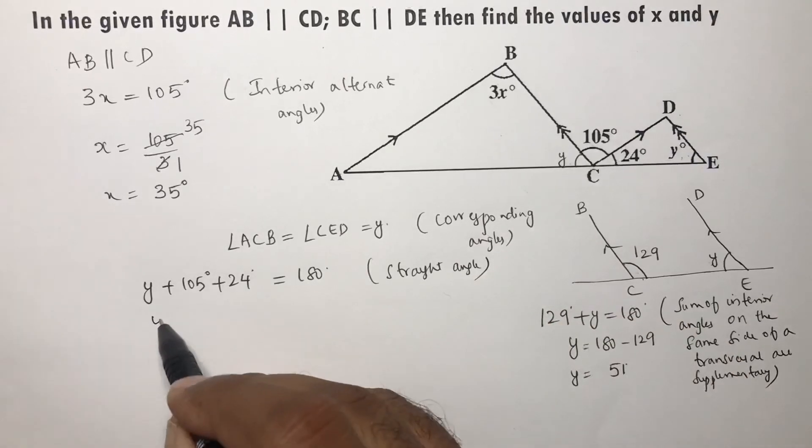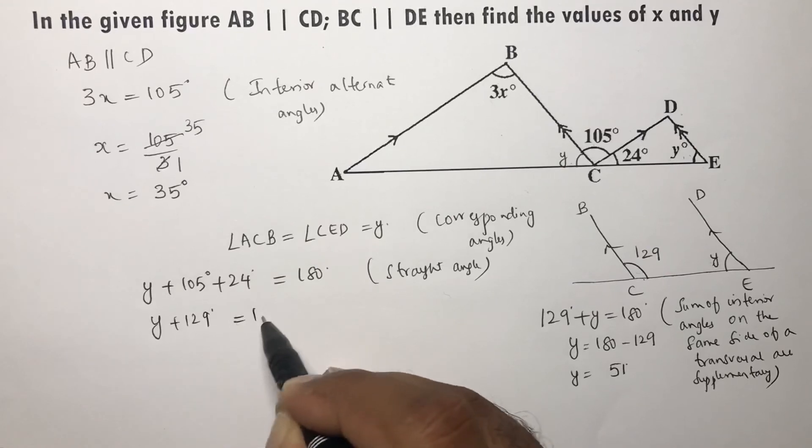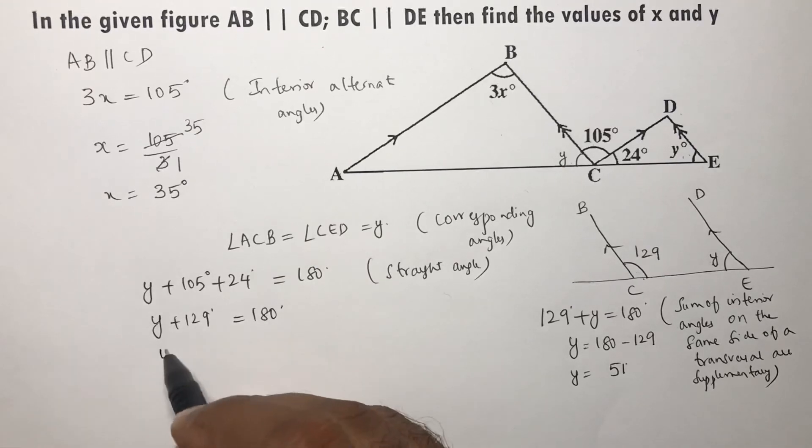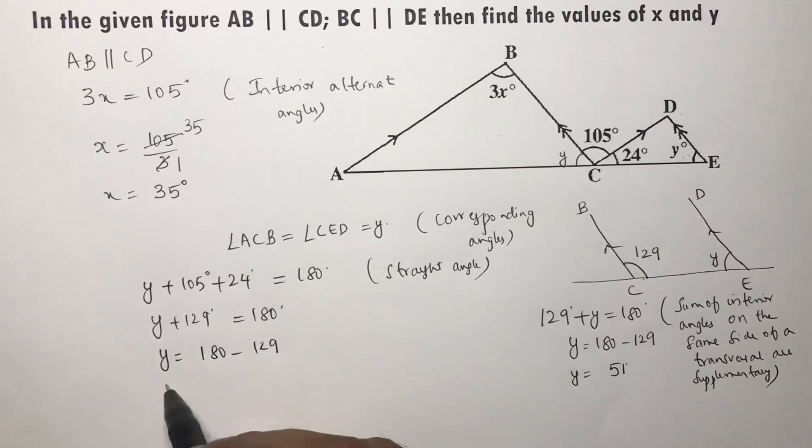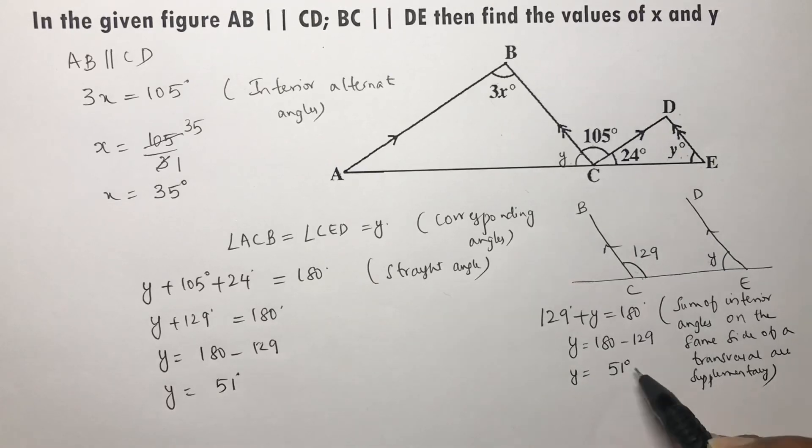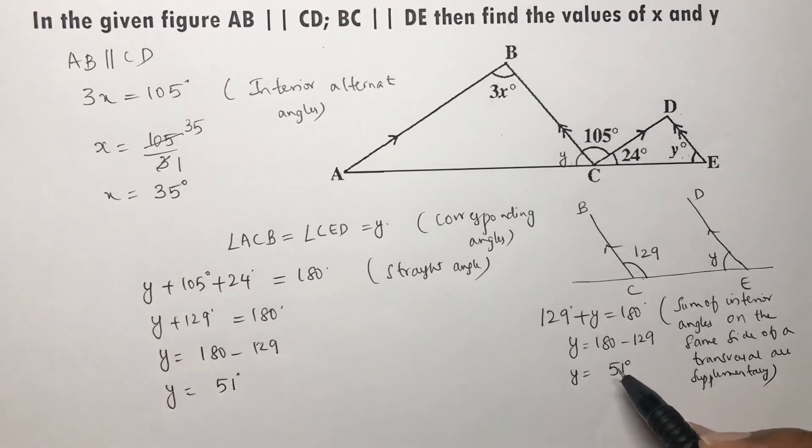So y plus 129 equals 180 degrees. Therefore y equals 180 minus 129, so y equals 51 degrees. Thus, y is 51 and x is 35.